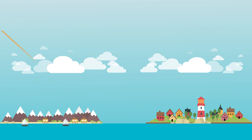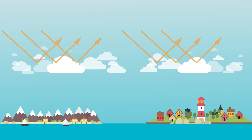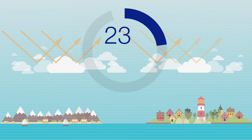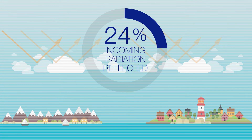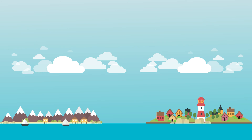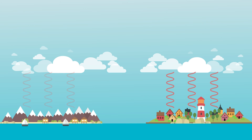There are many other processes that can impact the energy budget of the Earth. One example is clouds. Clouds can impact the amount of incoming solar radiation that reaches the Earth's surface. Globally, clouds reflect about 24% of incoming radiation, reducing the amount of radiation that the surface receives and cooling the Earth. However, clouds, especially high clouds, also absorb longwave radiation emitted by the Earth, and this acts to warm the Earth.